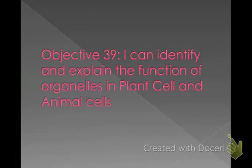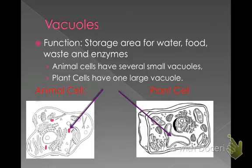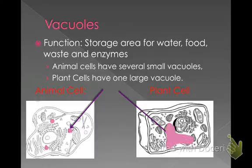Here's Objective 39: I can identify and explain the function of organelles in plant and animal cells. The first organelle is vacuoles. You've already heard this word — vacuoles are used in protists, but in protists they're used for digestion. In animal and plant cells, vacuoles are used for storage. In animal cells, you can see several small vacuoles that store food. In a plant cell, there is one huge vacuole, and again that is for storage.